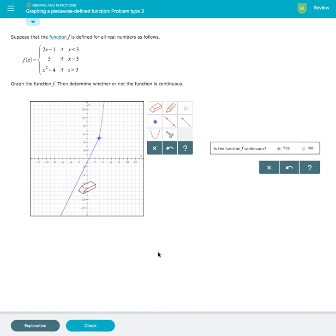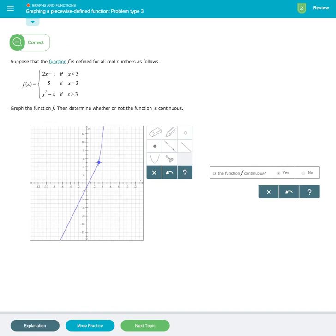And that's how we plot a piecewise defined function, with a parabola and a line. And we'll just check the answer. As we can see, the answer is indeed correct.